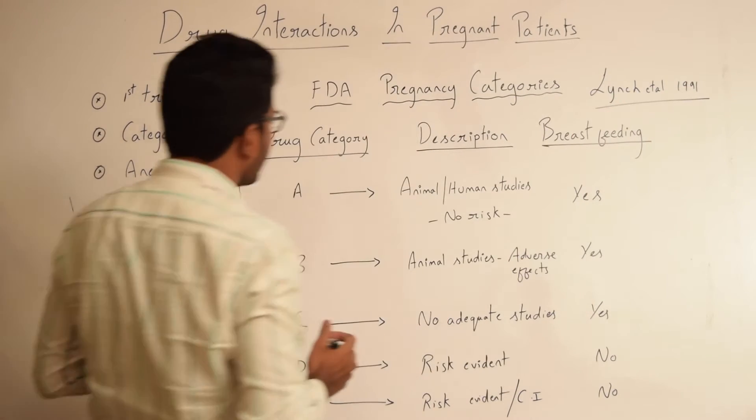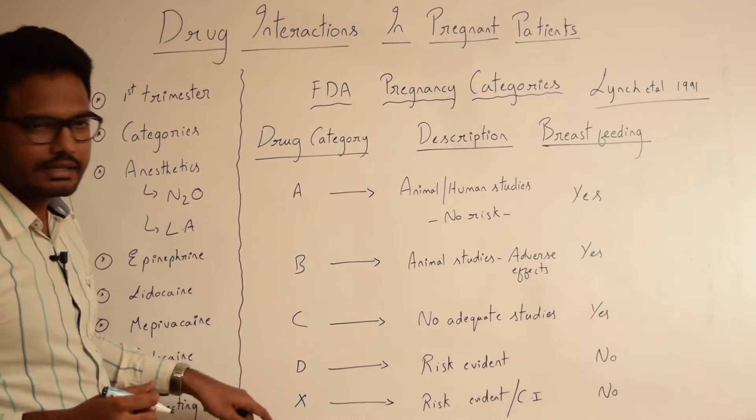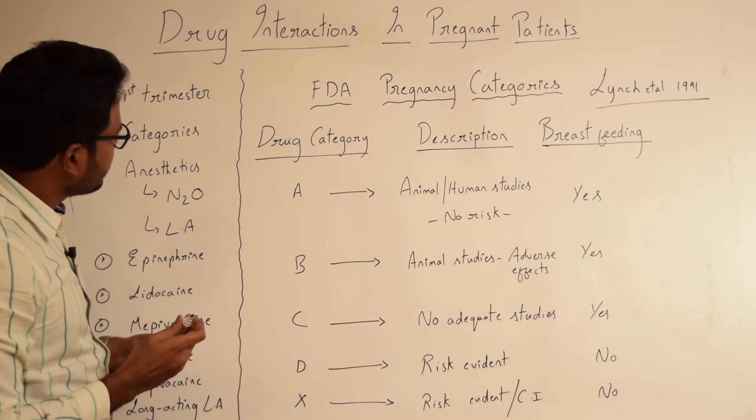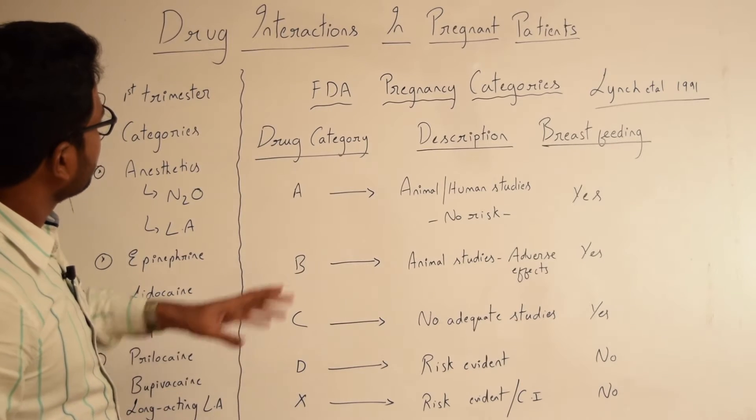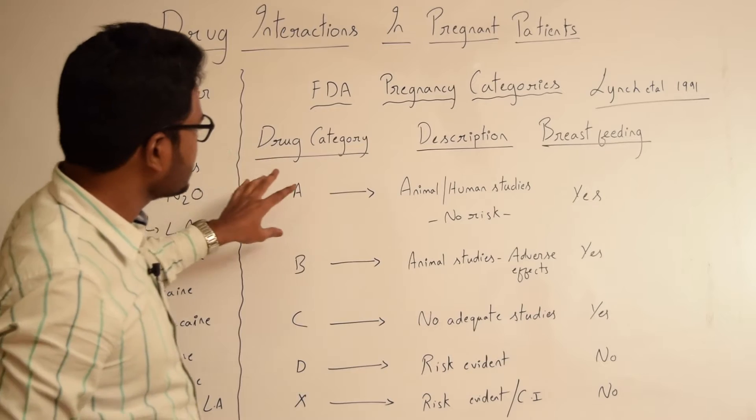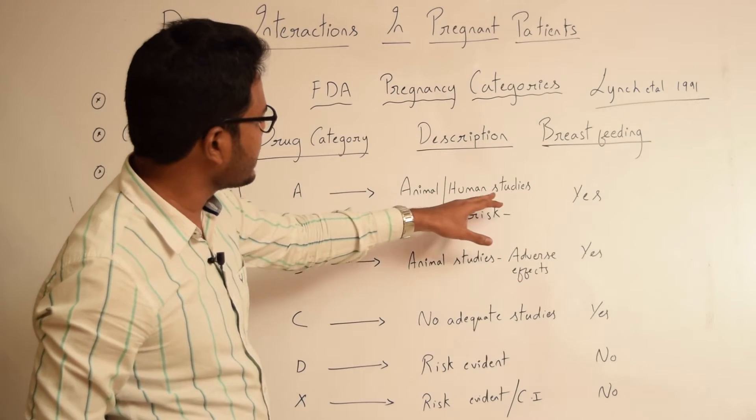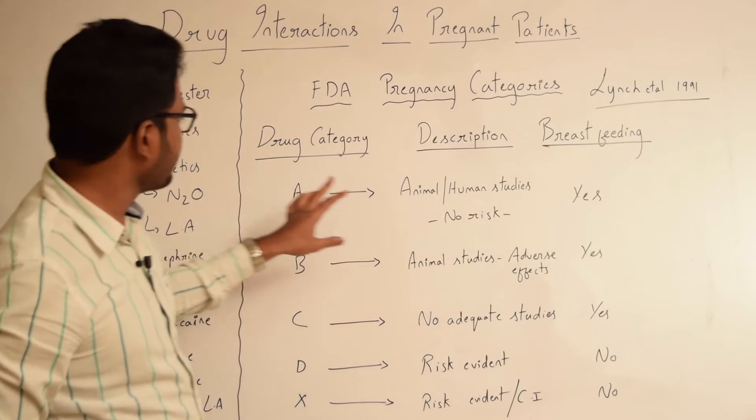The categories include A, B, C, D and X. According to drug category A, those drugs which have no risk to fetus either in animal or human studies come under drug category A.